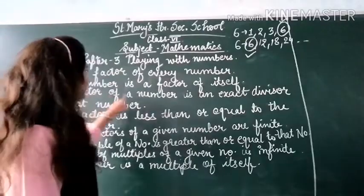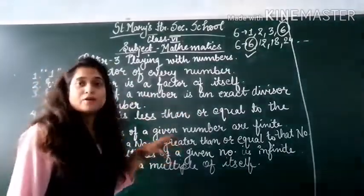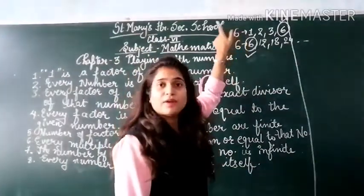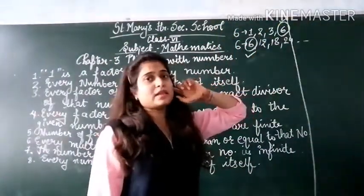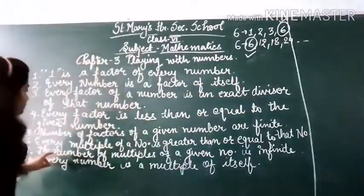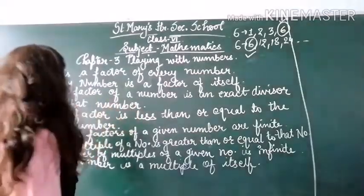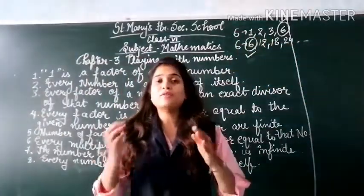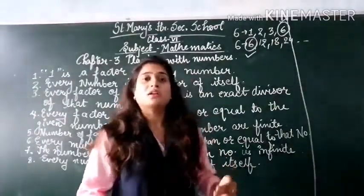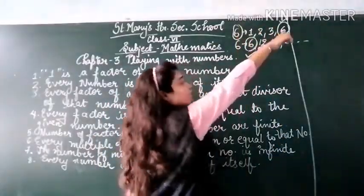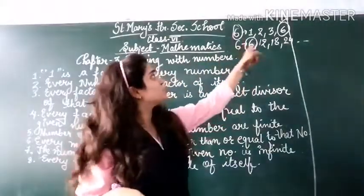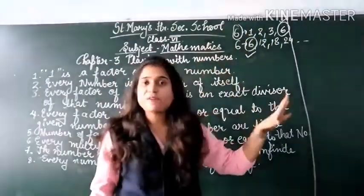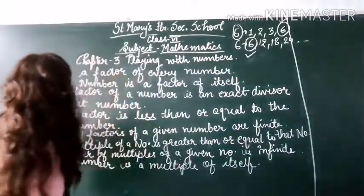Third point: every factor of a number is an exact divisor of that number. The factors of 6 are the exact divisors of 6. Fourth point: every factor is less than or equal to the given number. The given number is 6, so all the factors — 1, 2, 3 — are less than 6, and 6 is equal to 6. Every factor is less than or equal to the given number.